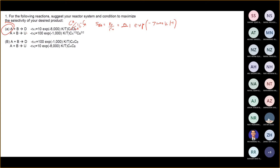Okay, CA to what power if you've already simplified? Anyone wants to give the answer? Have you done this question? CA to the half power, is that right doctor? Yes, it should be one-half because one minus one-half gives you one-half.